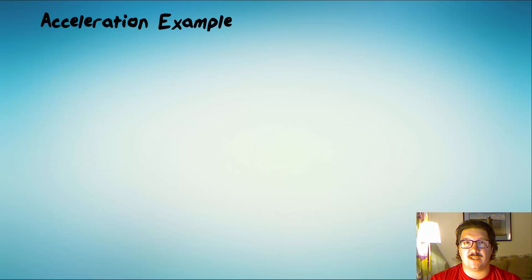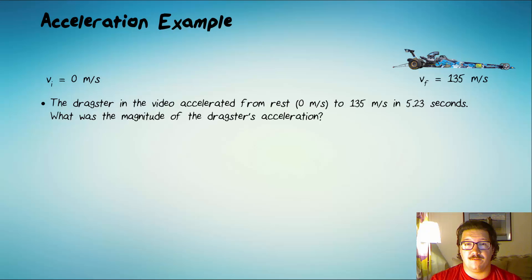Let's get back to acceleration. The dragster in the video accelerated from rest, which is 0 meters per second, to 135 meters per second in 5.23 seconds. Let's figure out the magnitude of the dragster's acceleration. Notice again, like we've seen before, I'm asking for the magnitude of the acceleration. We don't care what direction it was accelerating for right now.